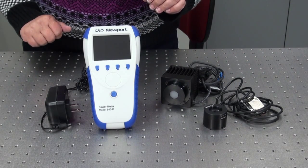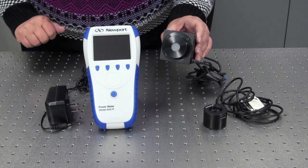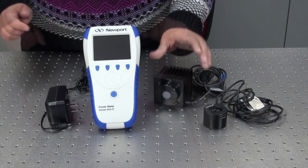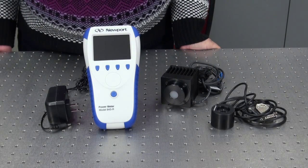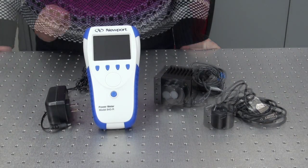The 843-R is also compatible with the new 919P series thermopile detectors. The 843-R is not compatible with the 818P series thermopile or the 818E series pyroelectric detectors.